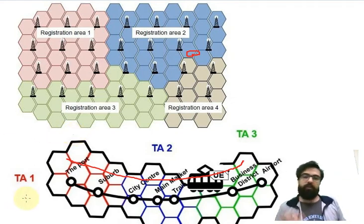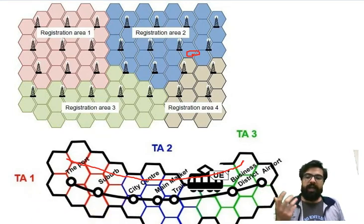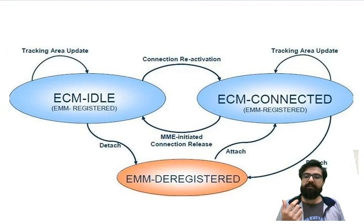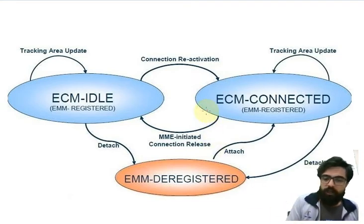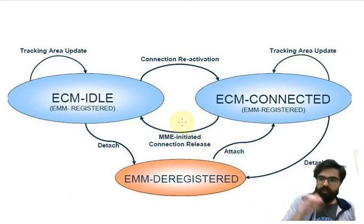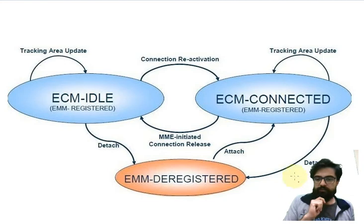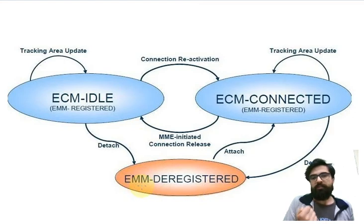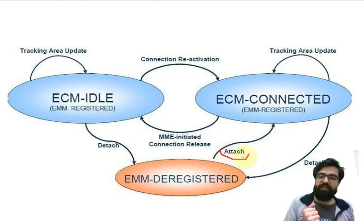We've covered all of them. Just to recap, if we take a look at this flowchart, there are three conditions: deregistered, connected, or idle. Deregister—EMM deregister, EPS Mobility Management deregister—is the situation when the cell phone is off.